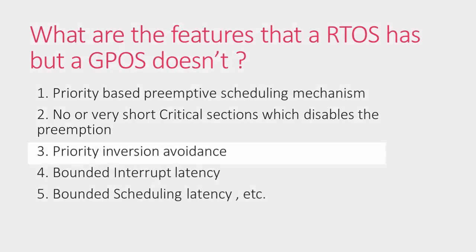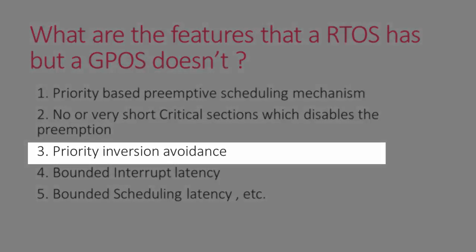In RTOS, avoiding priority inversion is a must; otherwise it may lead to the failure of the system. But in the case of GPOS, the priority inversion problem doesn't add a significant problem.